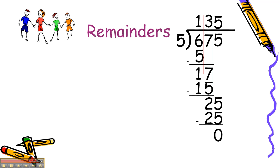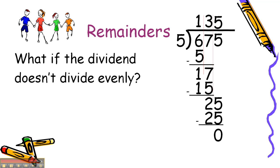What about remainders? What if the dividend didn't divide evenly? Well, if that 5 were a 6, we would have brought down a 6 and then our remainder would have been 1.